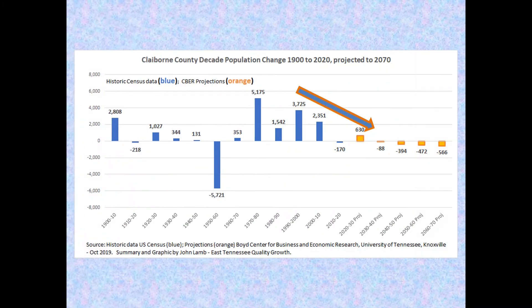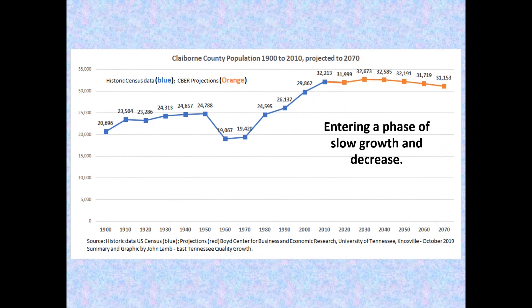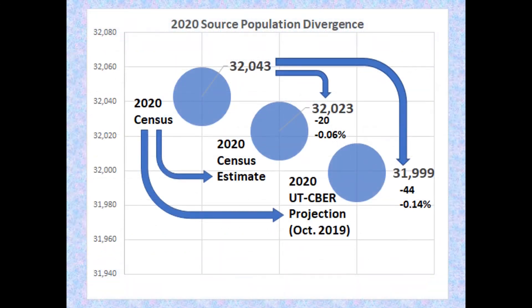This probable dynamic is reflected in official projections published in 2019 by the University of Tennessee Center for Business and Economic Research. Population change is projected to trend negative in coming decades. Thus, the county is projected to enter a phase of slow growth and decreasing population over the long term. These should be considered provisional projections until the 2020 census count can be factored into subsequent projections expected late 2021 or early 2022, but differences may be small.